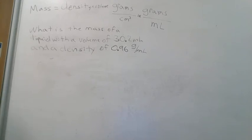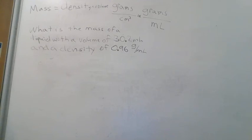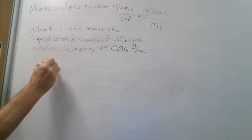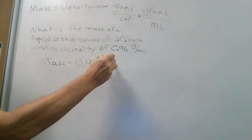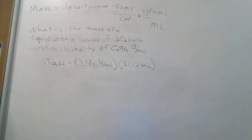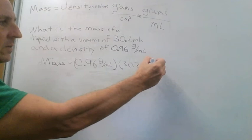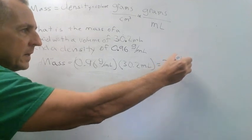The third type of density problem asks for mass. For example: what is the mass of a liquid with a volume of 30.2 milliliters and a density of 0.96 grams per milliliter? We use the equation where mass equals density times volume — it's best to use whichever equation isolates your unknown on the left. So mass equals 0.96 grams per milliliter multiplied by 30.2 milliliters. The units of milliliters cancel, leaving grams, and you get 28.992 grams.